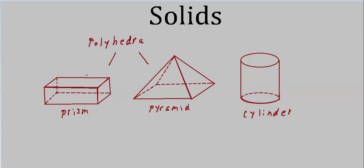I just used the word edge — that's more vocabulary we need to learn. If it's made up of polygons, it's a polyhedron. These lines that we used to call the sides of a rectangle are now called edges. And the face? Well, that's the polygon itself — this whole surface right here. This face is called a face.